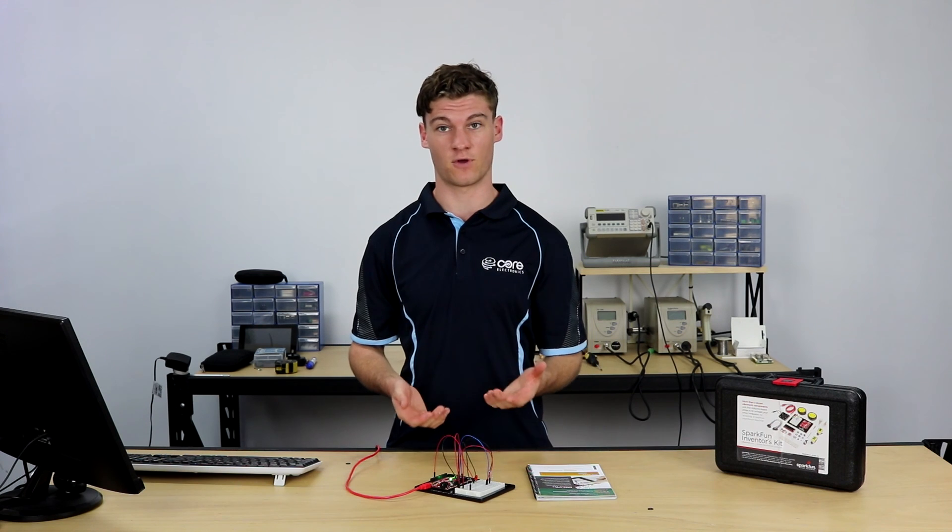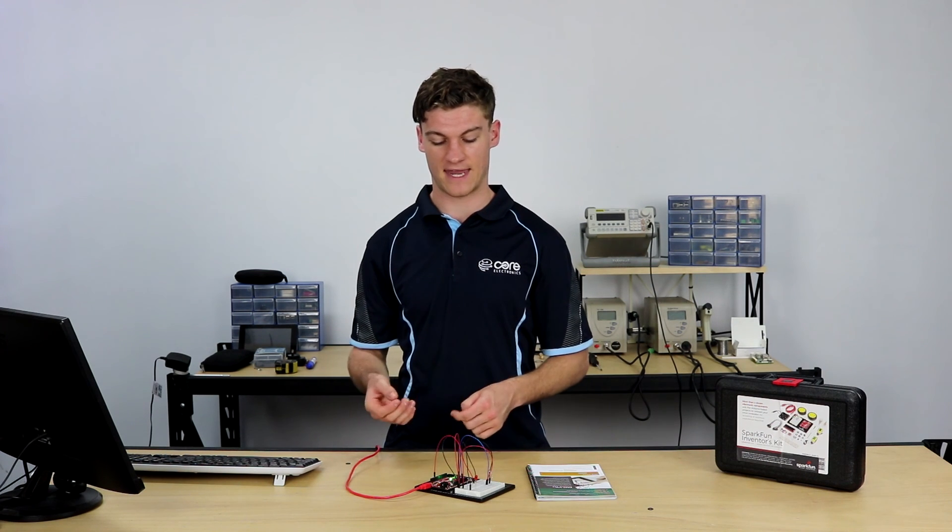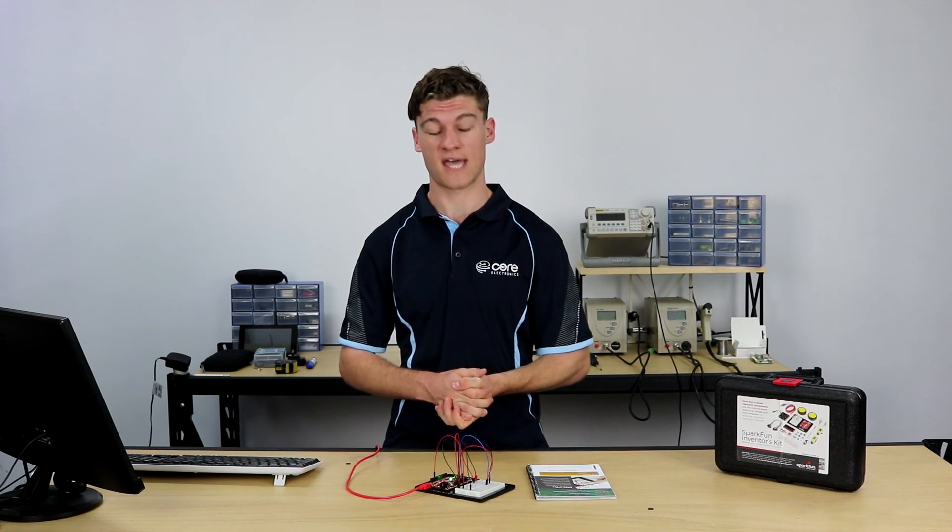So there we go. That is how we use a photo resistor in a voltage divide to activate a light or whatever we want to activate using Arduino. So I hope you enjoyed circuit 1C.